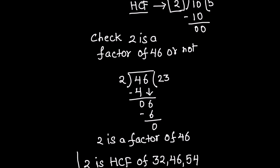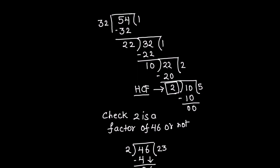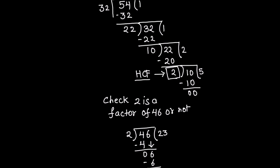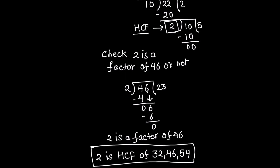So this is how we find the HCF of three numbers using the long division method. Out of 32, 46, and 54, we divide the largest number, 54, by the smallest, 32, and keep dividing, making each remainder the new divisor and the previous divisor the new dividend, until the remainder is 0. The non-zero divisor at that point is the HCF of the two numbers. We then verify that this HCF, which is 2, is also a factor of the third number, 46. Since it is, 2 is the HCF of all three numbers.